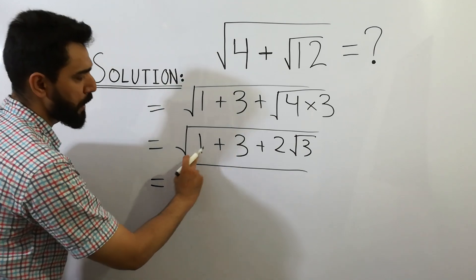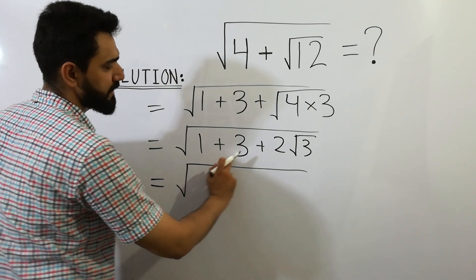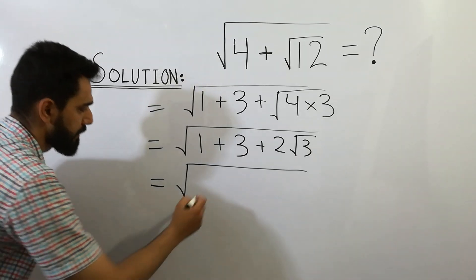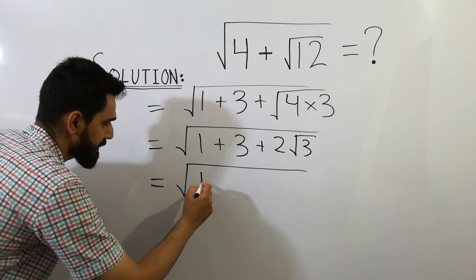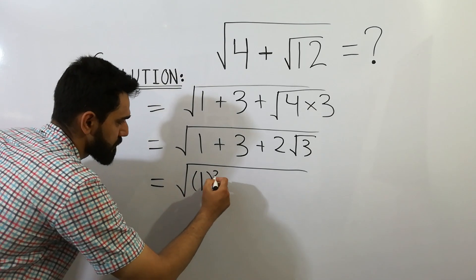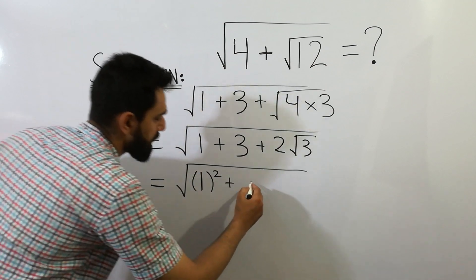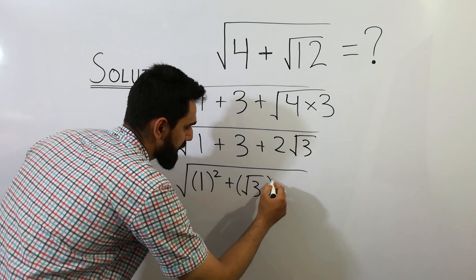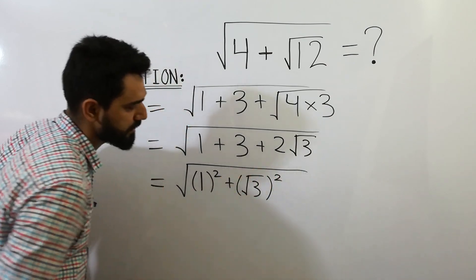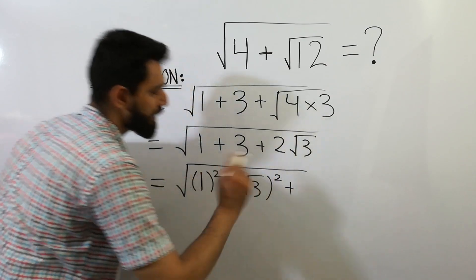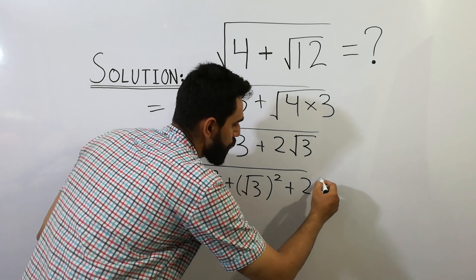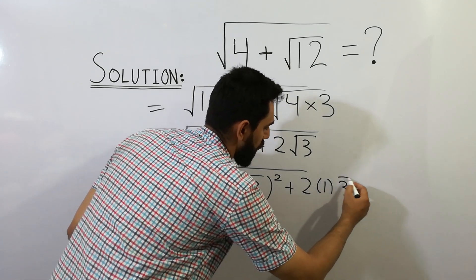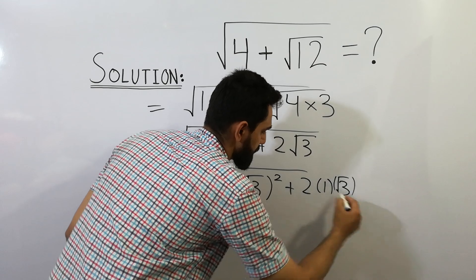a square plus b square plus 2ab. Write it as a square plus b square. B square can be written as square root of 3 squared, plus 2ab: 2 times 1 times square root of 3. Clear?